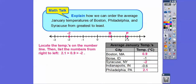Philadelphia is 2.1 — the number line goes by two tenths, so 2.2, 2.4, 2.6, 2.8, and 2.1 is in between 2.0 and 2.2. Boston is at 0.9, right between 0.8 and 1.0. And Syracuse is at negative 2. Since we're going from greatest to least, we go from right to left on the number line. So: 2.1 is the biggest, then 0.9, then negative 2.